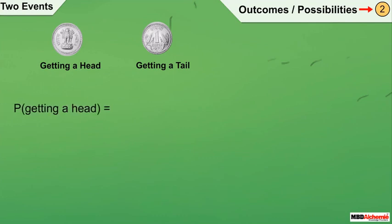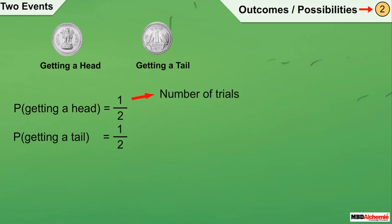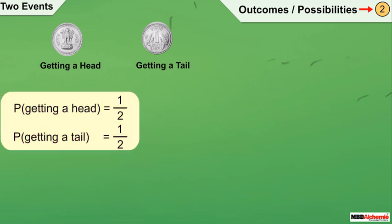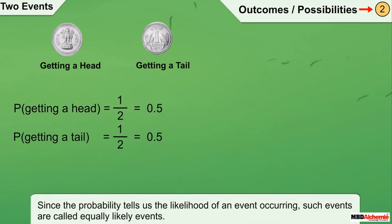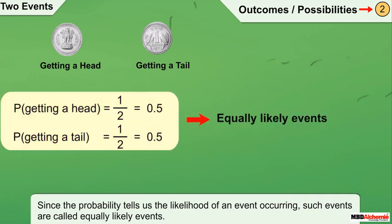So the probability of getting a head is 1 by 2, and the same for getting a tail is 1 by 2. The numerator of this fraction shows the number of trials in which the event happened, and the denominator shows the total number of all possible outcomes of the experiment. These can also be written in decimal form as 0.5. Since the probability tells us the likelihood of an event occurring, such events are called equally likely events.